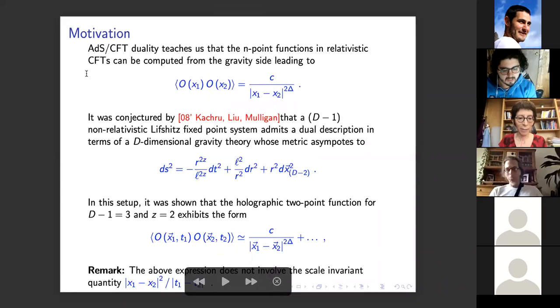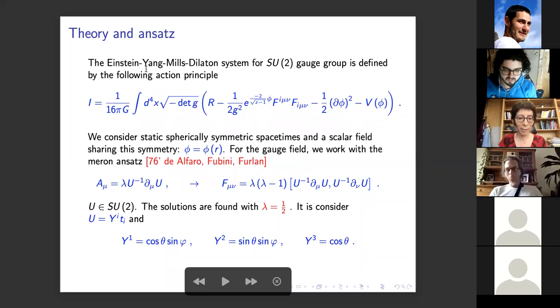Next please. Okay, a motivation to study Lifshitz spacetime comes from an extension of AdS/CFT duality that was conjectured by Kachru, Liu, and Mulligan in 2008, that strongly interacting non-relativistic theories admit a dual description in terms of weakly coupled gravity theory in one dimension more, whose metric asymptotes to the metric in the second equation, where z is the dynamical critical exponent and l is the Lifshitz scale.